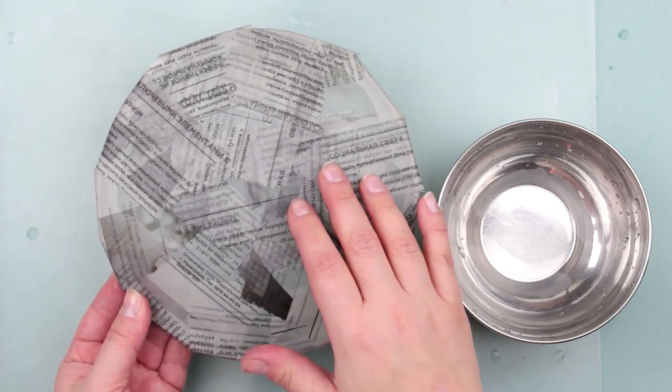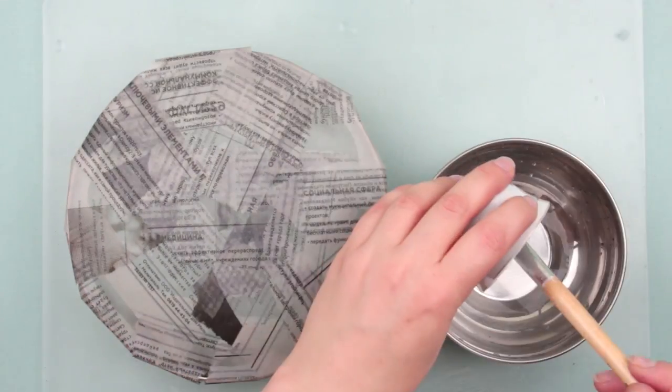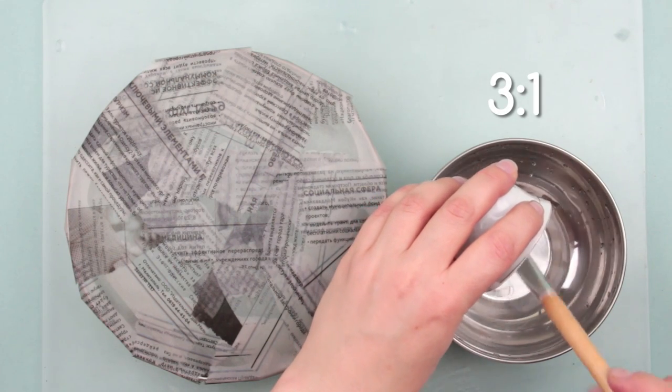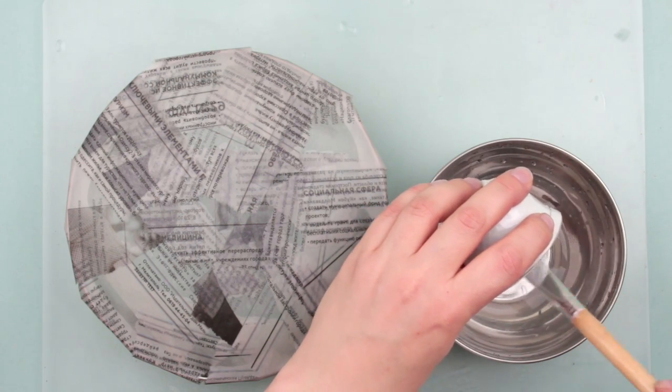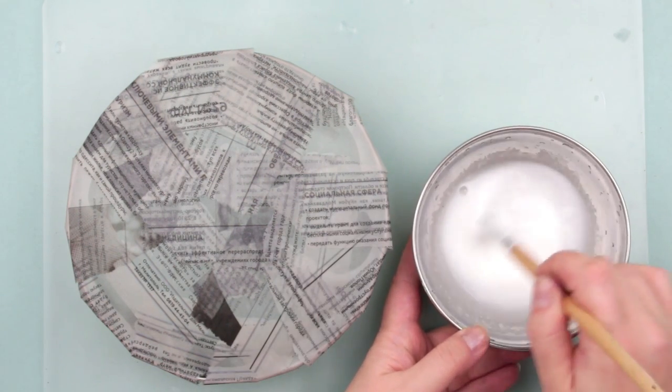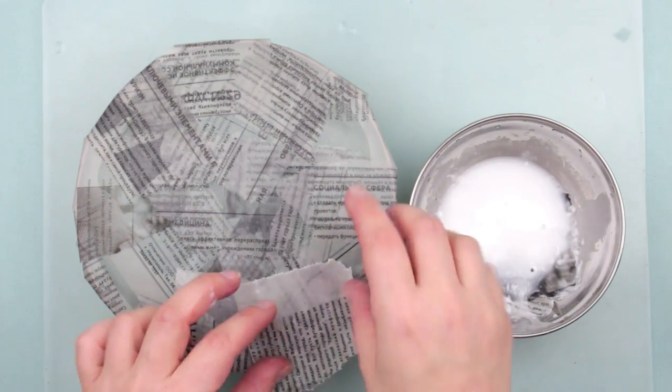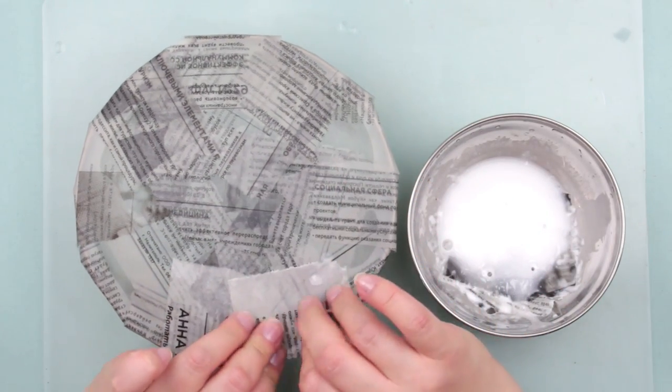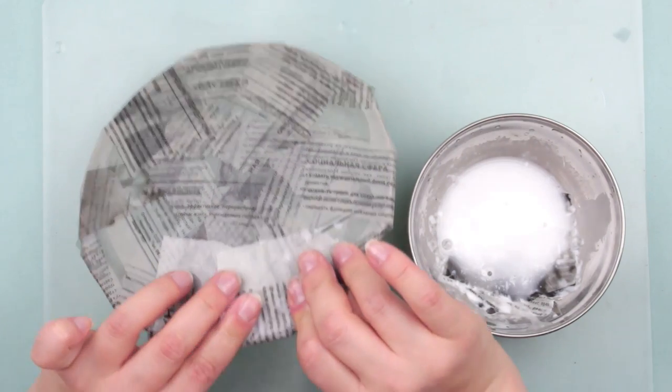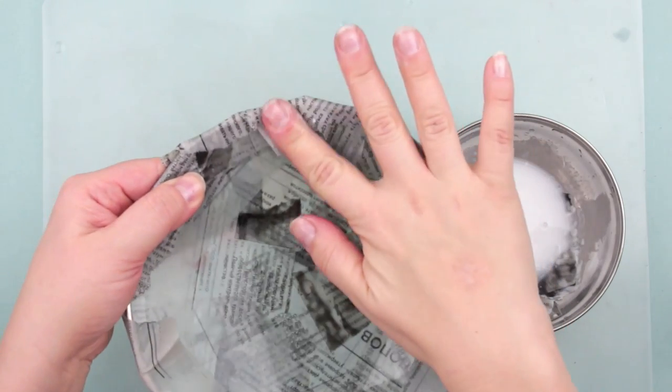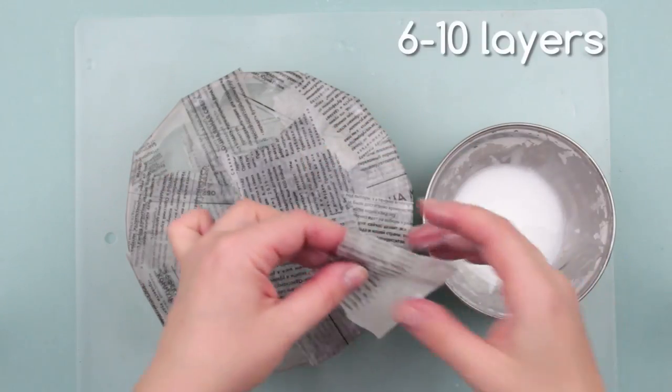Let the first layer dry. Add white glue to the water in a 3 to 1 proportion. Mix well. Apply the second coat in the same way. You should add 6 to 10 more layers.